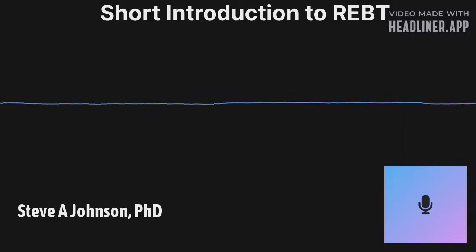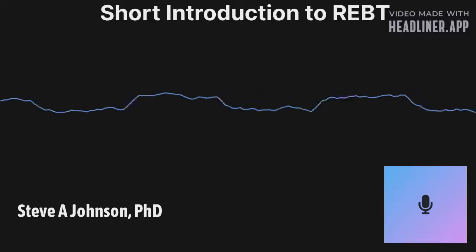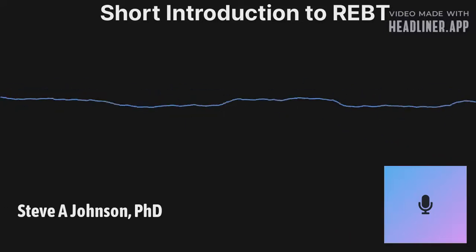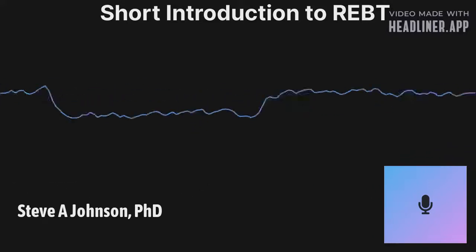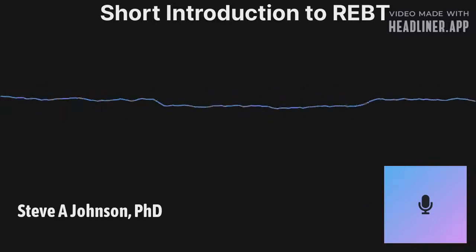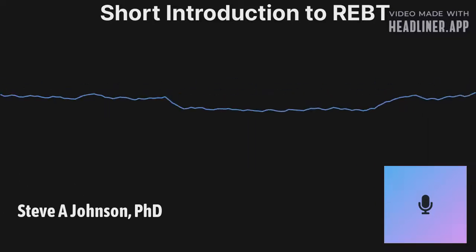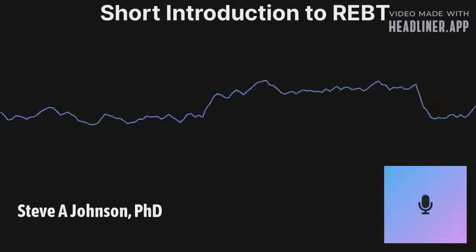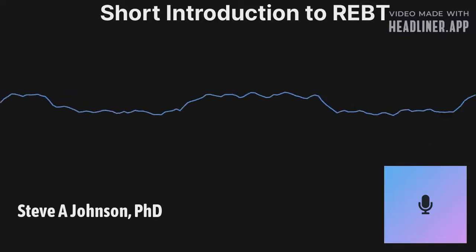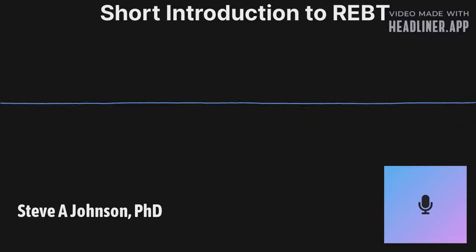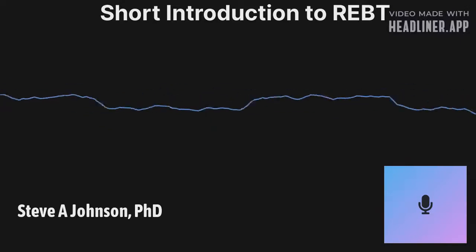It's pedagogically easier to explain the ABC model as linear to clients, but actually REBT holds that A, B, and C are all interconnected — which is good news, because changes in the A may cause changes in B and C. For example, if someone has anxiety about money and then inherits a few million dollars, the A changes and the anxiety may go away. Similarly, changing the B will change the A and C, and changing an emotion may change what counts as an activating event.